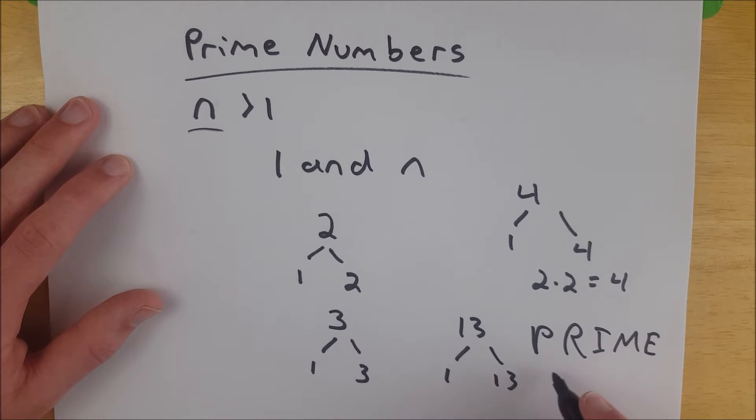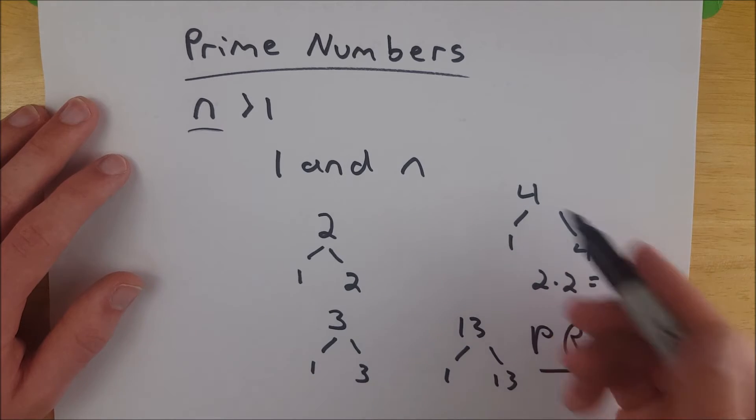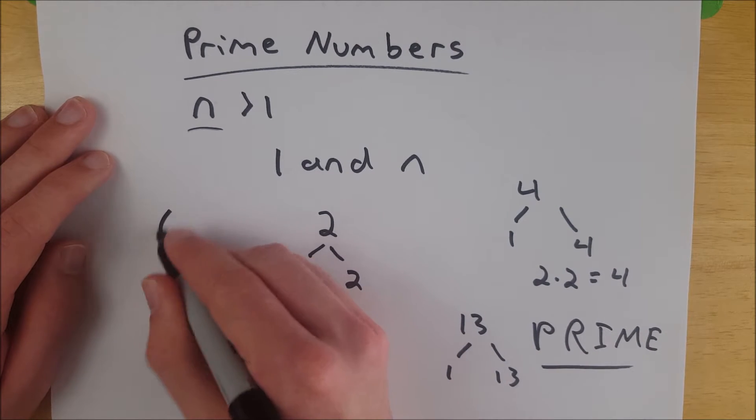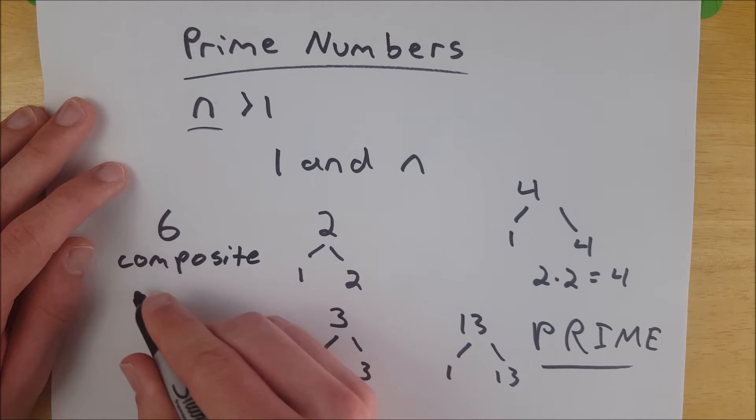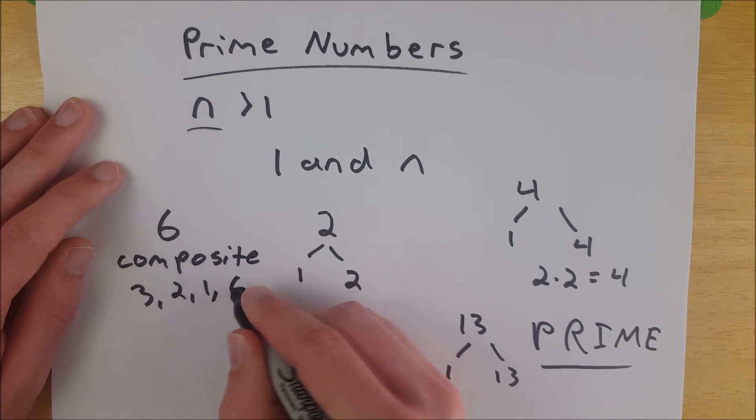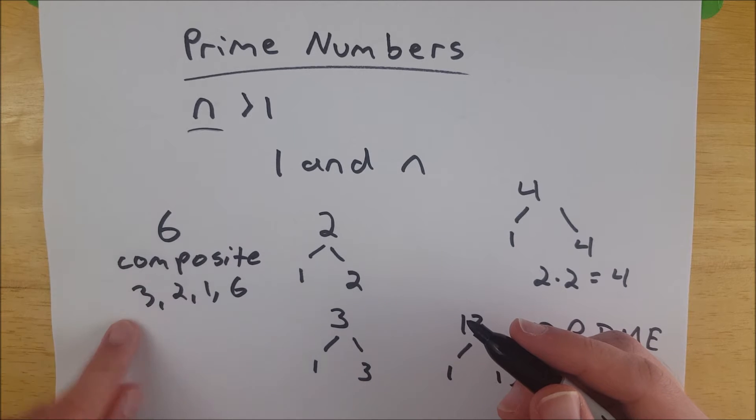That is the definition. Now numbers that aren't prime like four or like six are called composite. Six has factors three, two, one, and six.